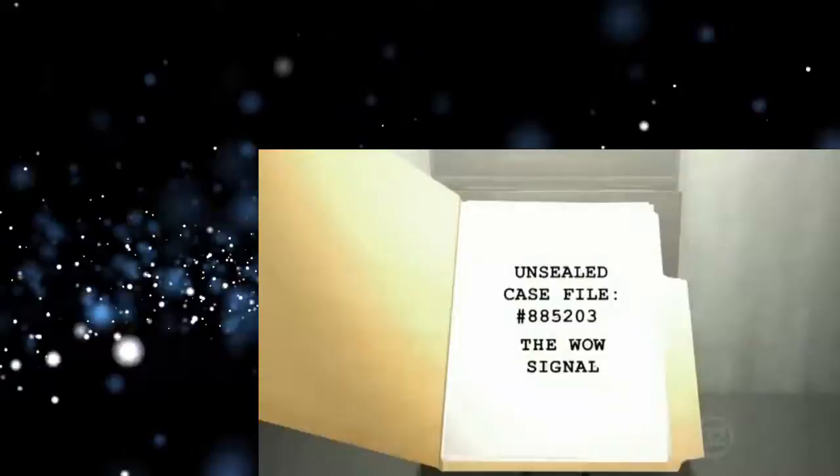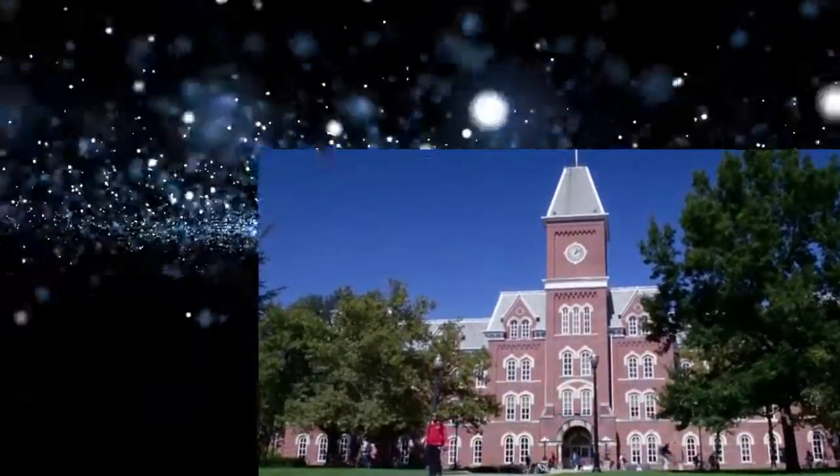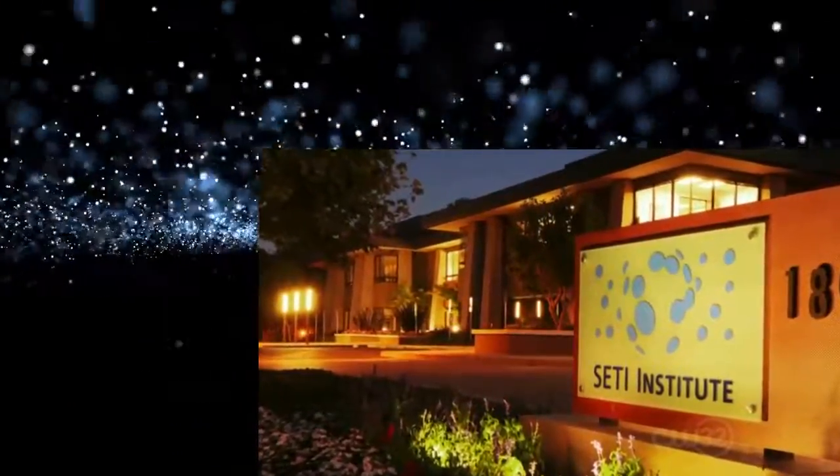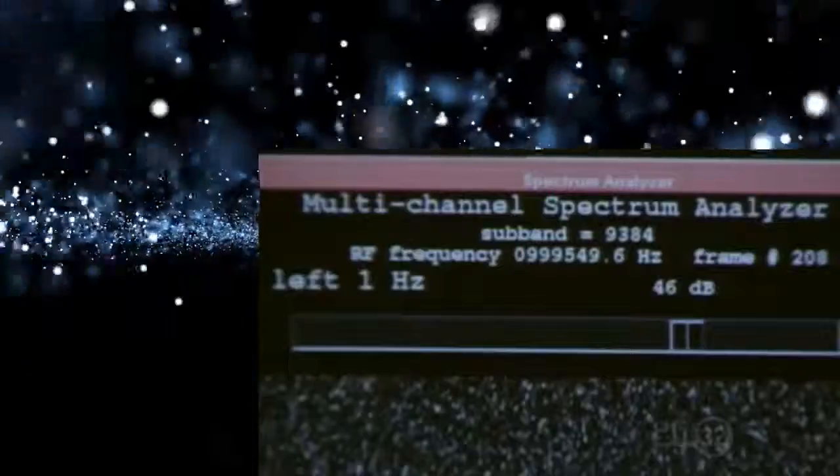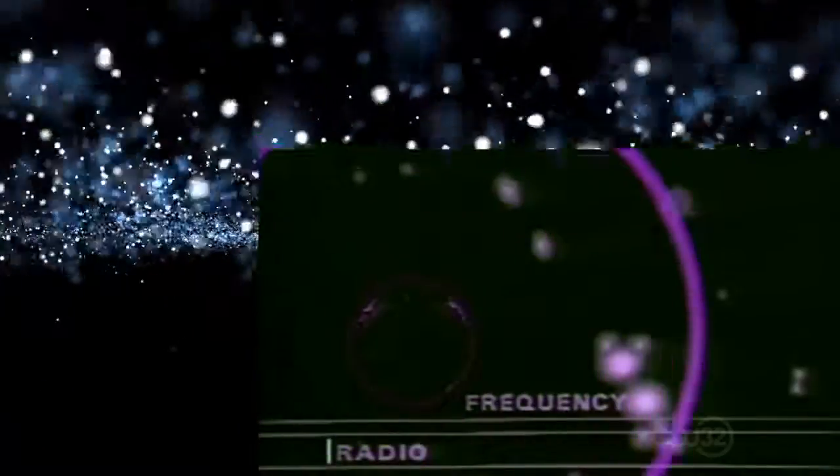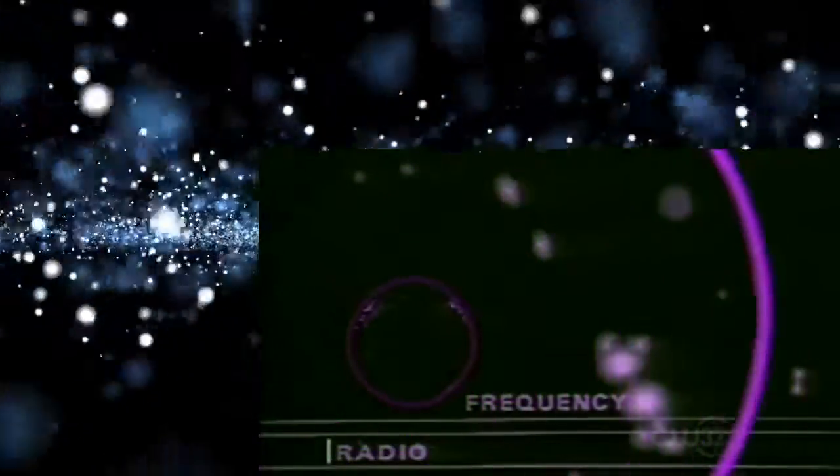Unsealed case file: The WOW signal. Ohio State University, August 15, 1977. SETI is shocked to receive a brief burst of radio waves at 11:16 p.m. The signal is recorded at 30 times louder than naturally occurring deep space signals. It is tracked for 72 seconds before it disappears. The unexpected burst of sound from space is so rare, the message is dubbed the WOW signal by one of the technicians on duty that day.